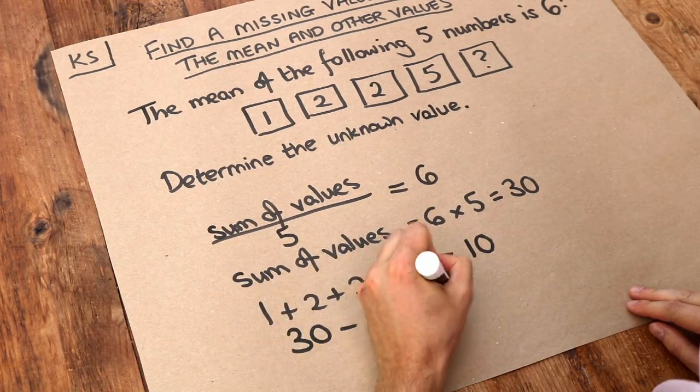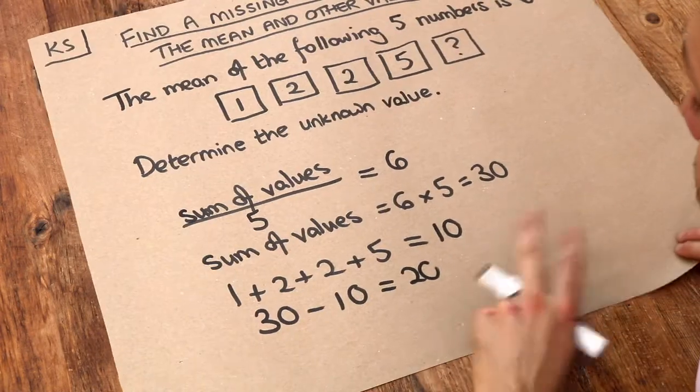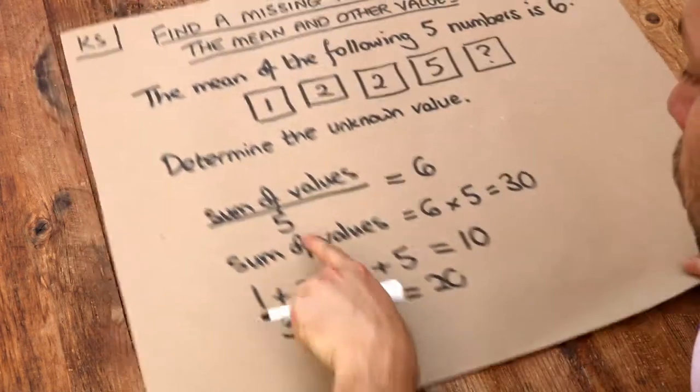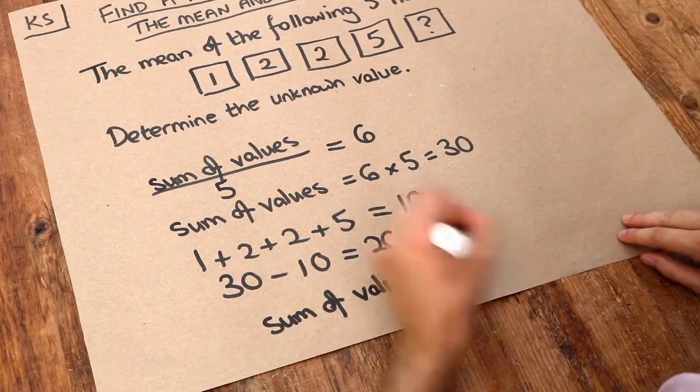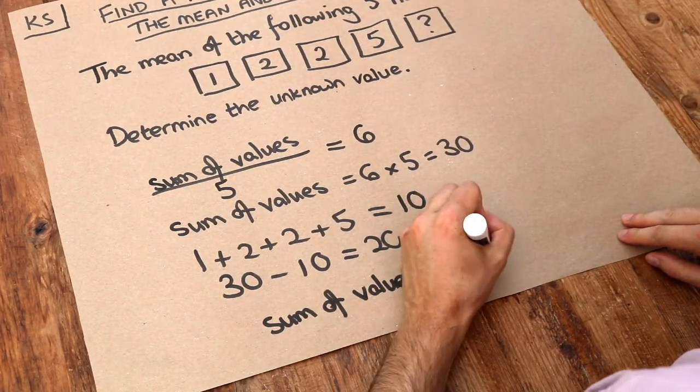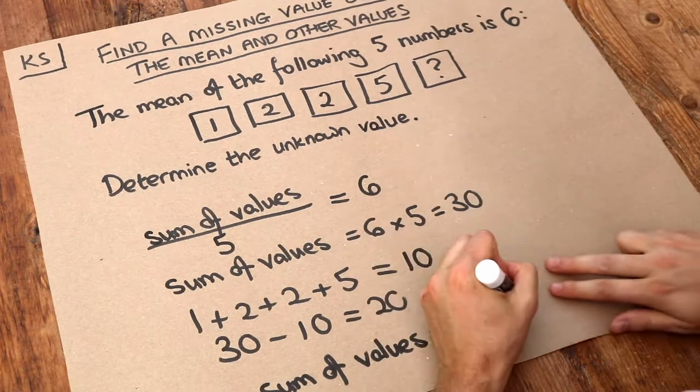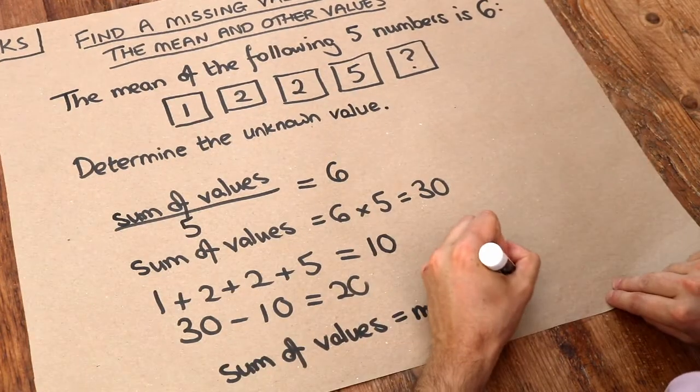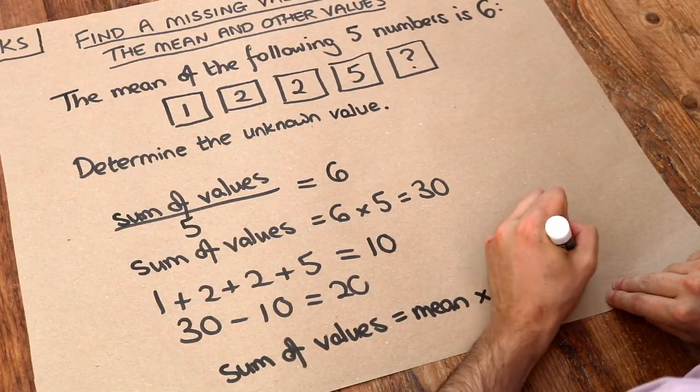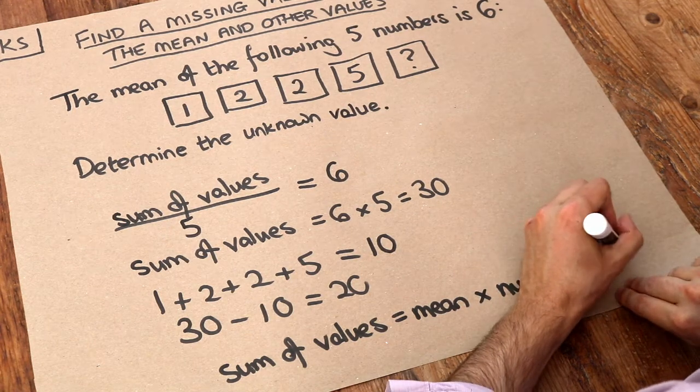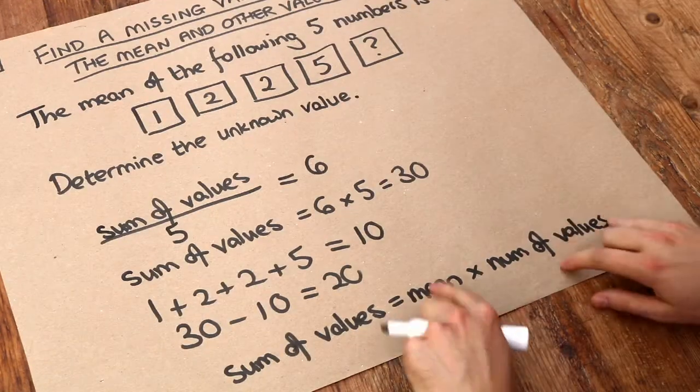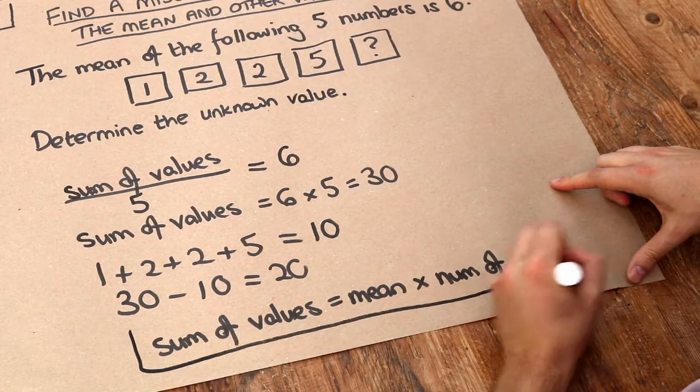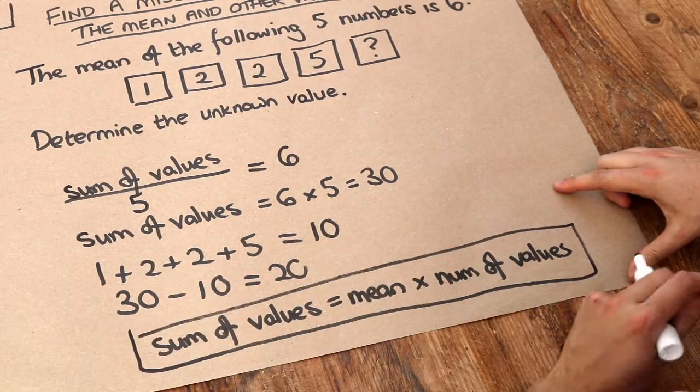So the key formula to remember from this video is that if you want to find the sum of the values, you can just take the mean, in this case 6, and times it by the number of values there are, which in this case is 5. So it's 6 times 5 in this case. And that's just a rearrangement of the formula for mean.